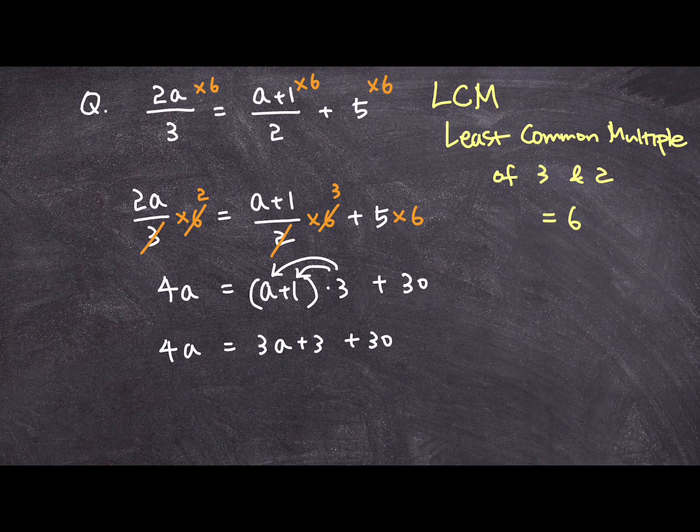So let's get organized here. Let's combine like terms together. I have 4a is equal to 3a plus 33.